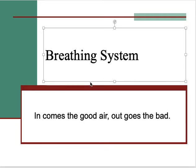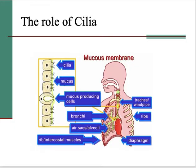We're going to look at the breathing system. A quick summary of breathing: in comes the good air, out goes the bad. For your Leaving Cert, you're going to need to know a little bit more depth than Junior Cert in terms of the role of the cilia in the breathing system, the actual mechanism of inhalation and exhalation, and the role the brain has to play in that. Apart from that, there isn't that much new stuff in this chapter.